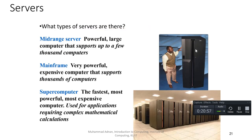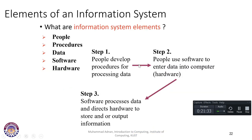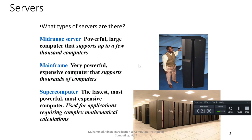Supercomputers are the fastest, most powerful, and most expensive computers, used for applications requiring complex mathematical calculations. Mainframes are powerful and expensive, sitting between mid-range servers and supercomputers. Mid-range servers are powerful computers that can support up to a few thousand computers, acting as servers for the rest of the computer systems. With that, this lecture ends — in the next lecture we will discuss other important topics. Take care.